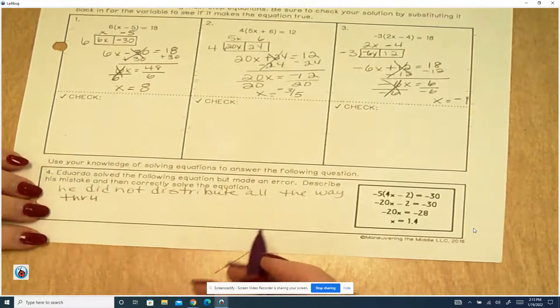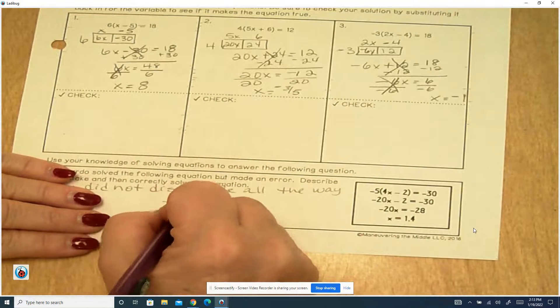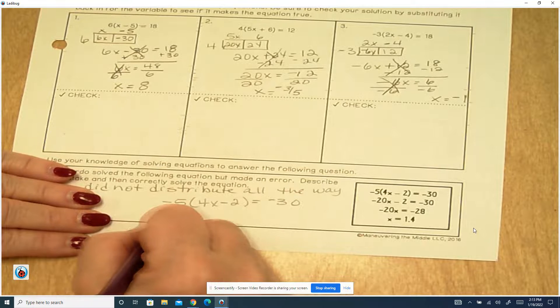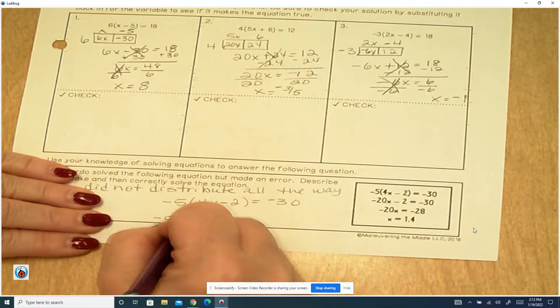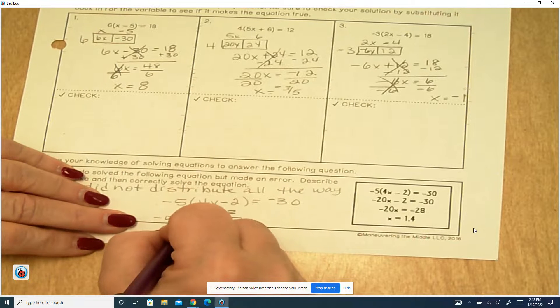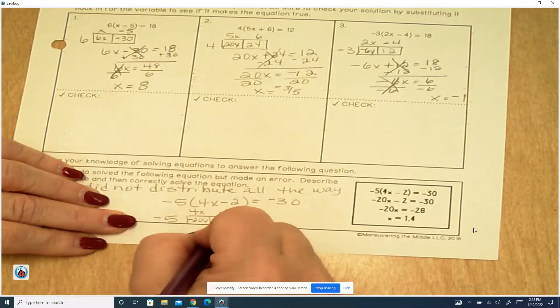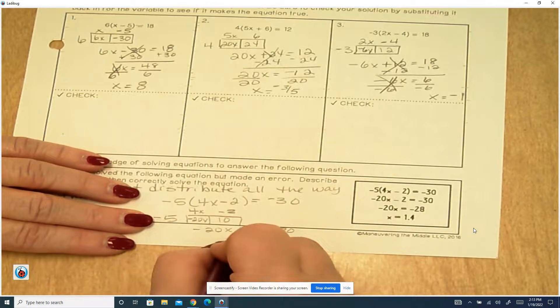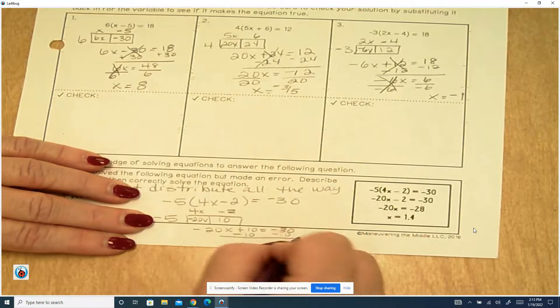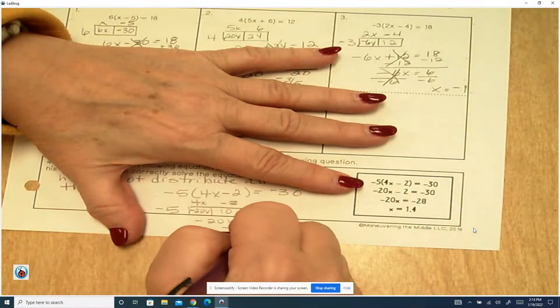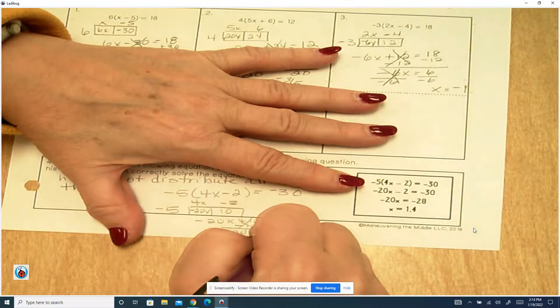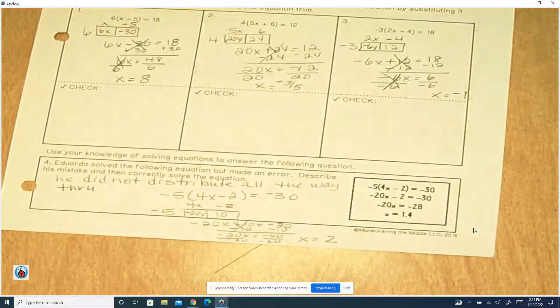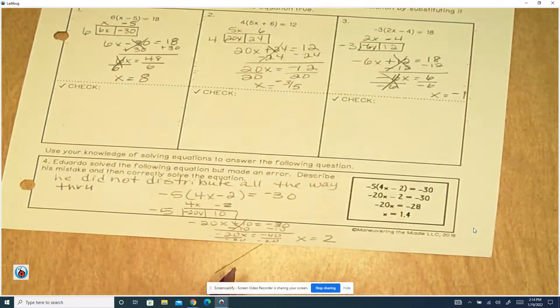And then it says, correctly solve the equation. So if we do it, we've got a negative 5, 4x minus 2 equals a negative 30. So we've got a negative 5 and a 4x minus 2. That's a negative 20x and a negative 5 times a negative 2 is 10. So we have a negative 20x plus 10 equals a negative 30 minus 10. These cancel out. A negative 20x equals a negative 40. Divide by a negative 20. x equals 2.